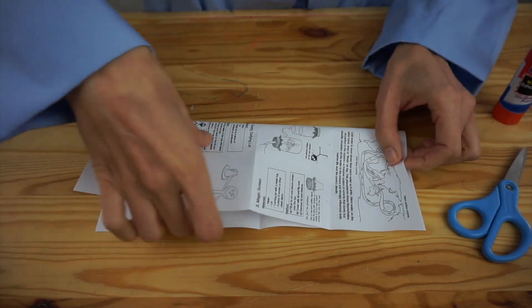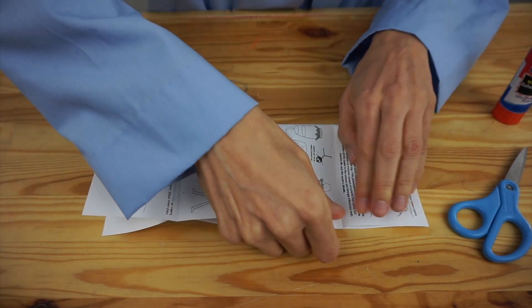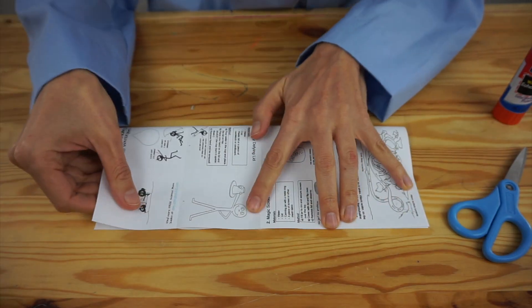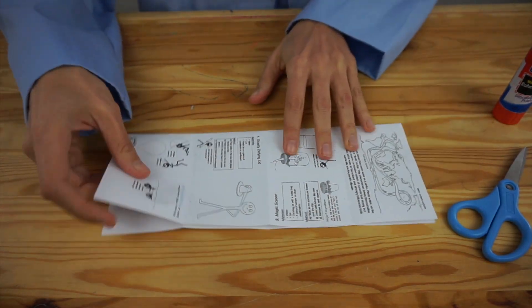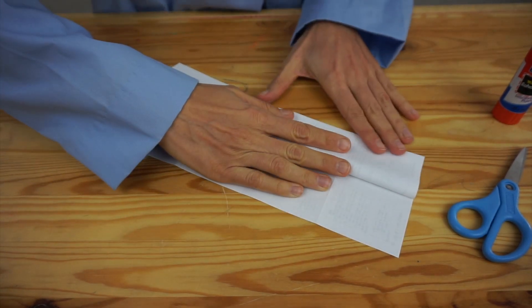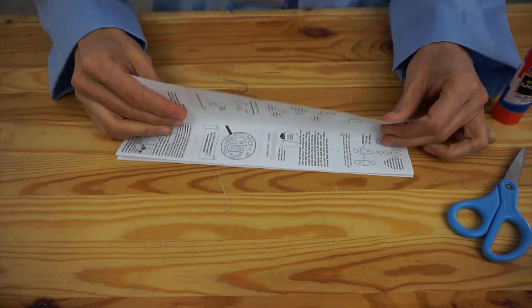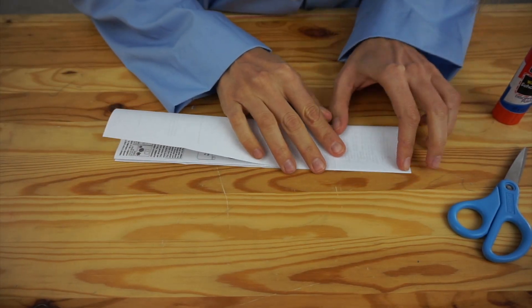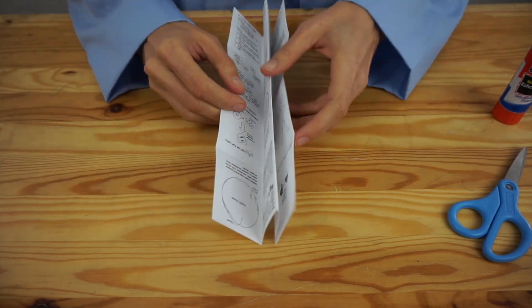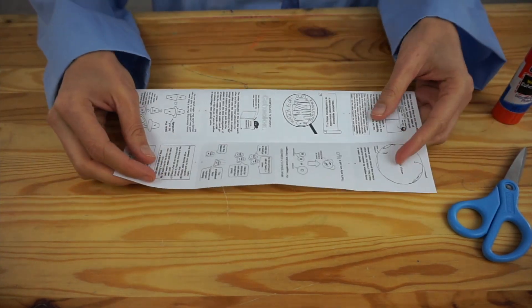Now we're going to do the same thing going the other direction. So fold your paper in half, then fold each edge down to the middle, and when we finish this part of our folding, you'll see that the paper has been divided into 16 equal parts.